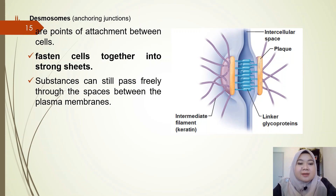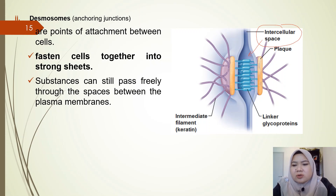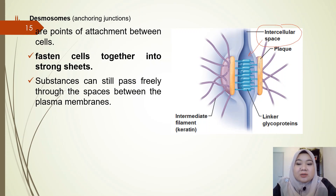Next we have the desmosome, which is an anchoring junction. Desmosomes are points of attachment between cells, and one main function is to fasten cells together into strong sheets. Substances can still pass freely through the spaces between plasma membranes — this small space is called the intercellular space. A distinct and unique feature of desmosomes is that they are anchored to intermediate filaments made of keratin — you can see hair-like projections coming from the cells.